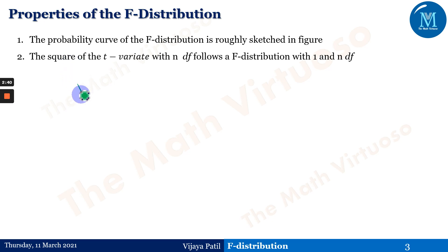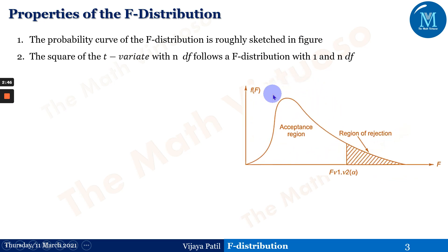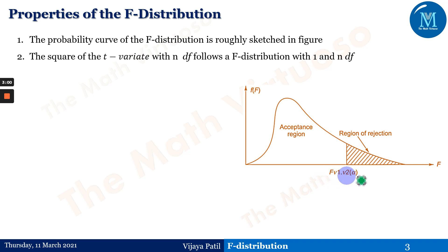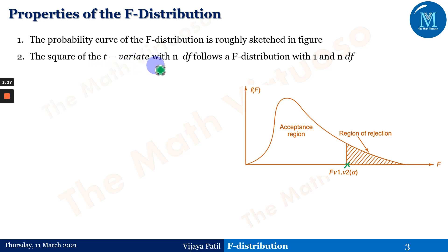Properties of the F-distribution: The probability curve of the F-distribution is roughly sketched in the figure. You can observe the F-distribution figure showing the acceptance region and the region of rejection, F(ν₁, ν₂, α). This particular region is divided into two: the region of rejection and the region of acceptance. Also, the square of the t-variate with n degrees of freedom follows an F-distribution with 1 and n degrees of freedom.